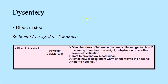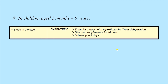Dysentery means blood in the stool. In children aged 0 to 2 months, it is classified as severe dysentery and the child must be referred to hospital after giving the first dose of intramuscular antibiotic — either ampicillin or gentamicin. In older children aged 2 months to 5 years, three days of ciprofloxacin is given, dehydration is treated, and the child is followed up after two days.